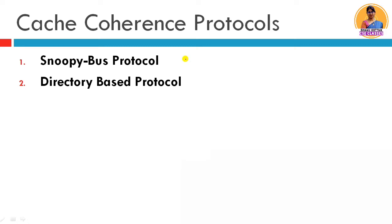The Snoopy Bus Protocol is a successful protocol for maintaining Cache Coherence. The second protocol is the Directory Based Protocol, used in distributed shared memory multi-processors like NUMA machines, where multiple systems are connected through crossbar switches or SMPs. That system is quite scalable, so we use the Directory Based Protocol. Snoopy Bus Protocol is generally used in UMA machines, and Directory Based Protocol is used in scalable NUMA machines. In this video we will see the Snoopy Bus Protocol, and in the next video we will see the Directory Based Protocol.